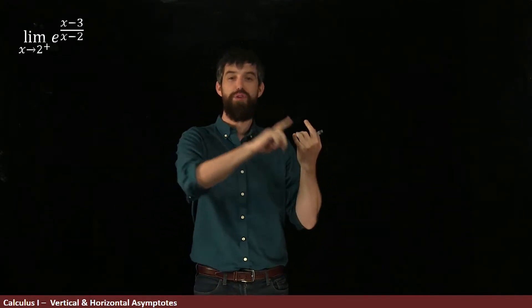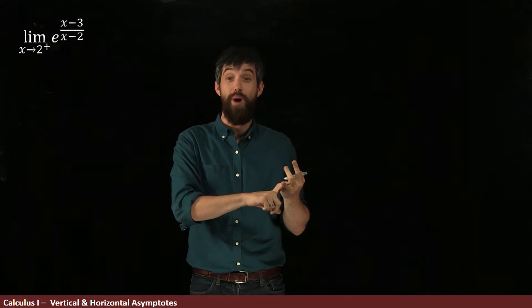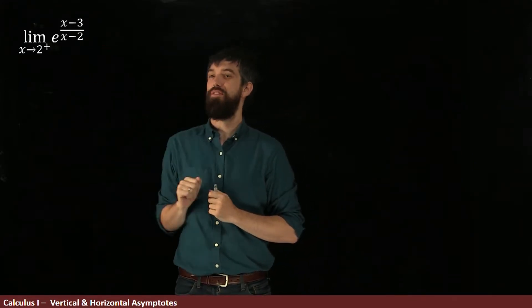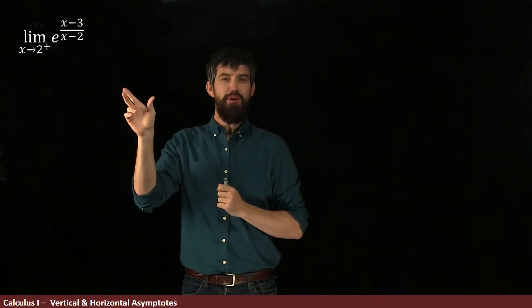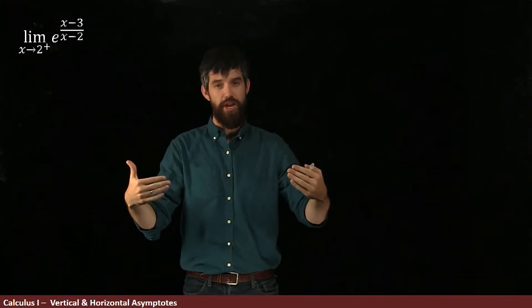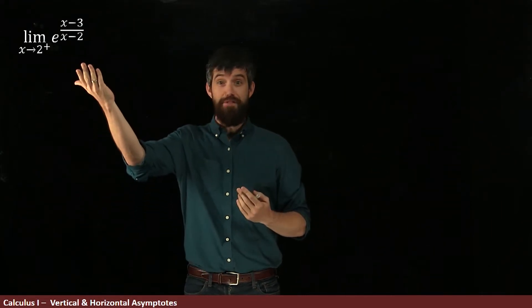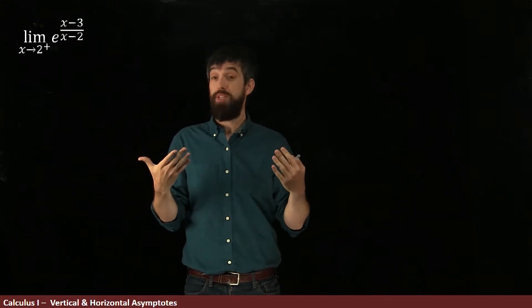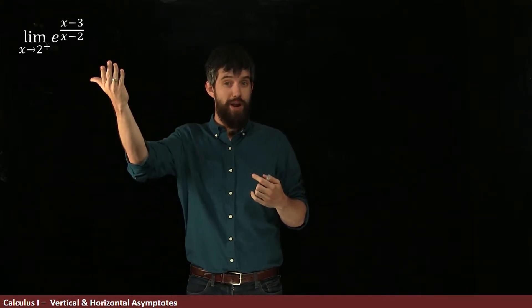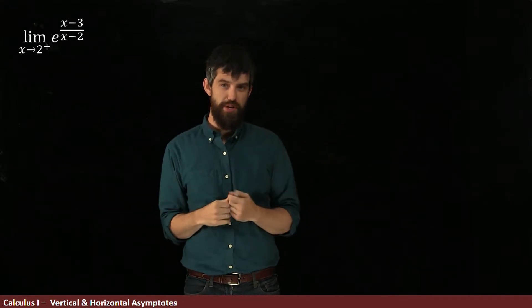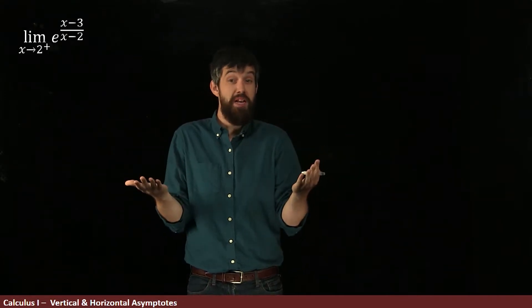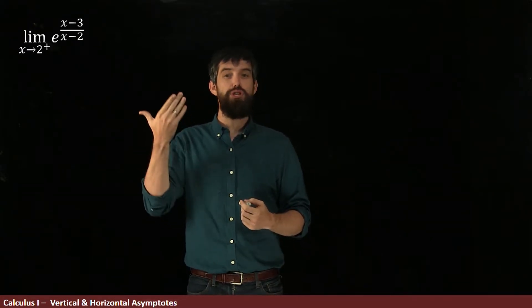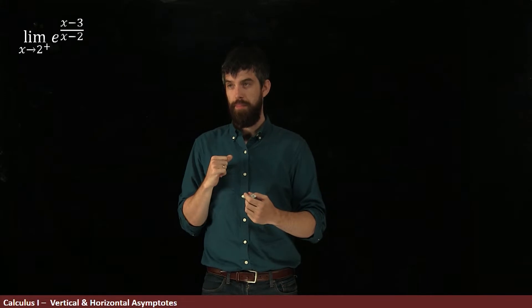Finally, we're going to figure out all the vertical asymptotes, all the horizontal ones, and come up with a graph of this function. How do I actually investigate this limit? When I look at this, I notice that it's a composition of two different functions: there's an outside function, e to the whatever, and then there's an inside function, this quotient x minus 3 over x minus 2. So, knowing that the exponential function is a continuous function, I'm going to investigate the limit as x goes to 2 from the right of the inside function.